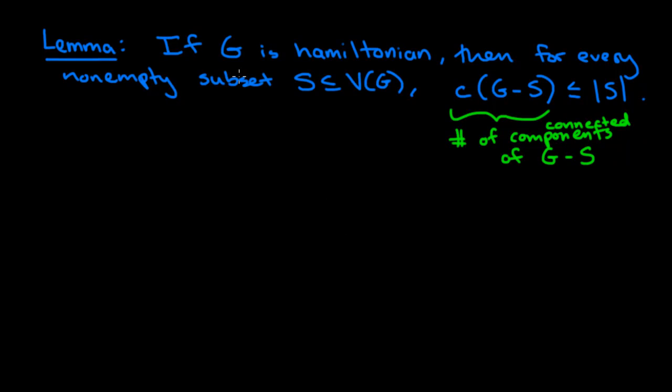In the previous video, we saw that if a graph G is Hamiltonian, which means that it has a Hamilton cycle, then for every non-empty subset of vertices of the graph, the number of connected components of the graph without that vertex set S is less than or equal to the size of the set S.